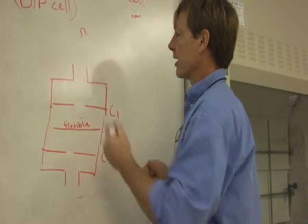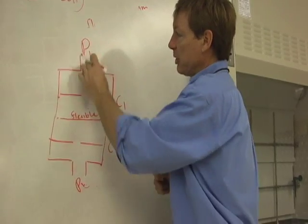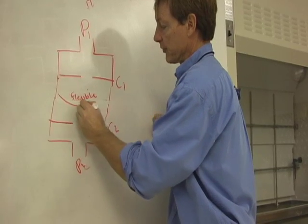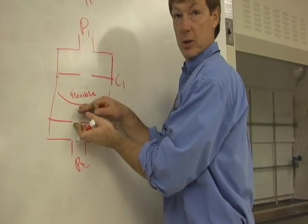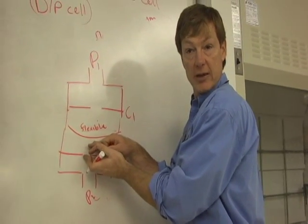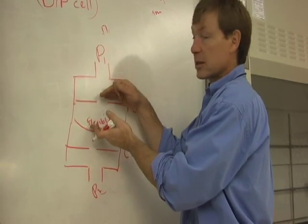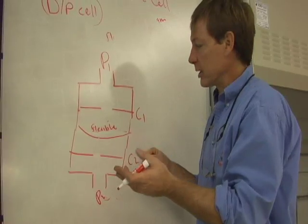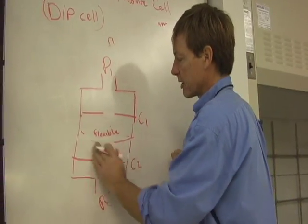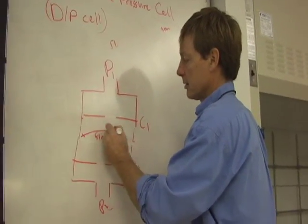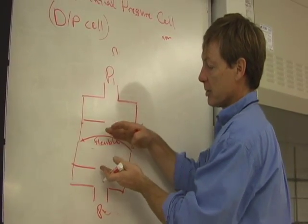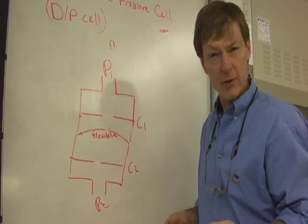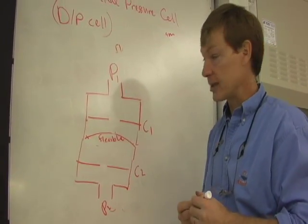So if P1 is higher than P2, this flexible diaphragm is going to flex this way, and the distance between these plates is going to go down, and so the capacitance is going to increase on this side. So you can compare them and you get very accurate readings. If P2 is greater than P1, it's going to flex this way. It's an exaggeration. But now I've got less capacitance here, more capacitance here. And I can compare those capacitances and get a pretty good idea of how it works.